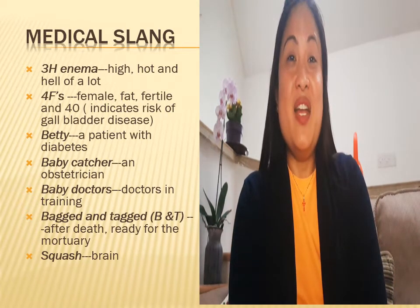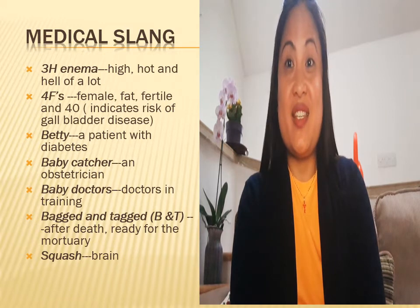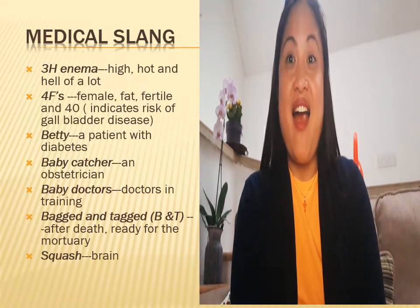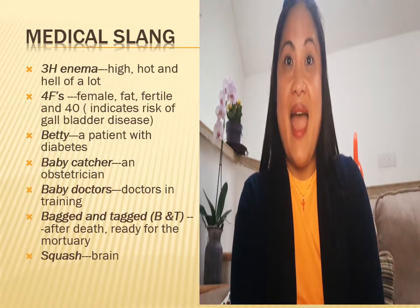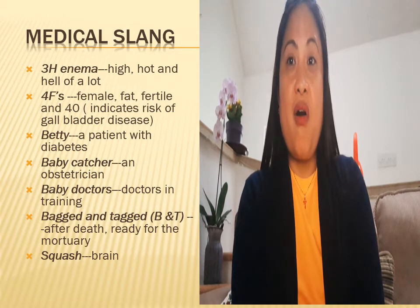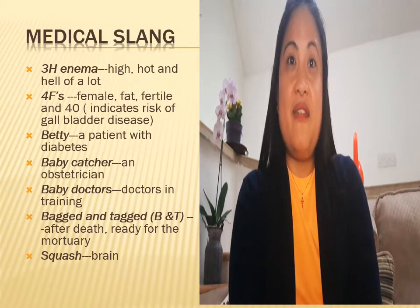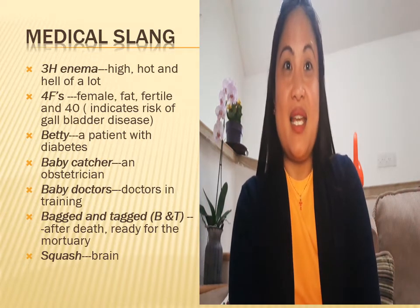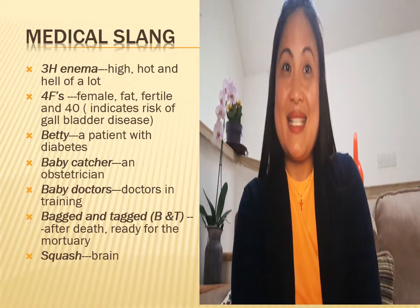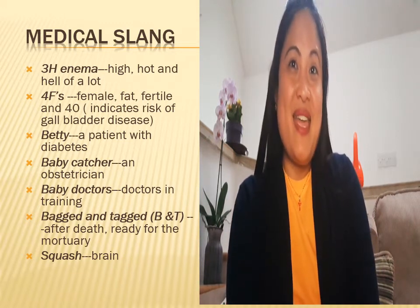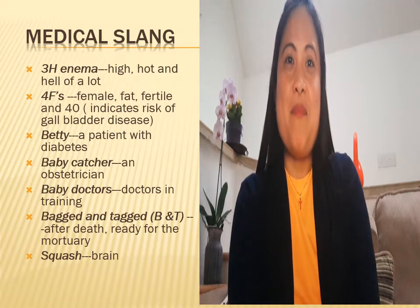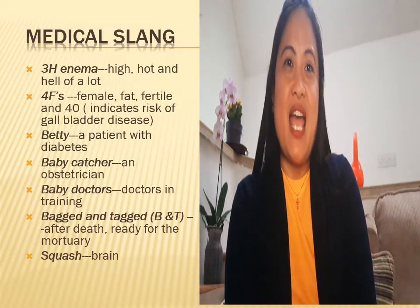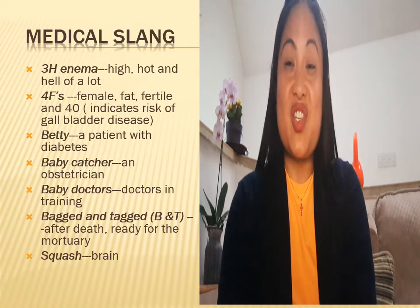The following are medical slang. If you happen to encounter these words and expressions, you should be able to understand what these slangs are. We have 3H enema — 3H stands for high, hot, and hell of a lot. We also have 4Fs, which means female, fat, fertile, and 40, indicating risk of gallbladder disease. Betty is a patient with diabetes. Baby catcher is an obstetrician. Baby doctors means doctors in training. Bagged and tagged, or BNT, means after death, ready for mortuary. And squash means brain.